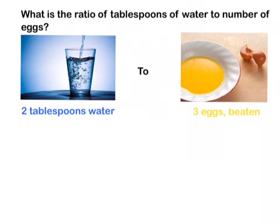Okay, so let's solve the problem number 2. What is the ratio of tablespoons of water to number of eggs? So, this is the tablespoon of water, 2, and this is 3 eggs beaten.